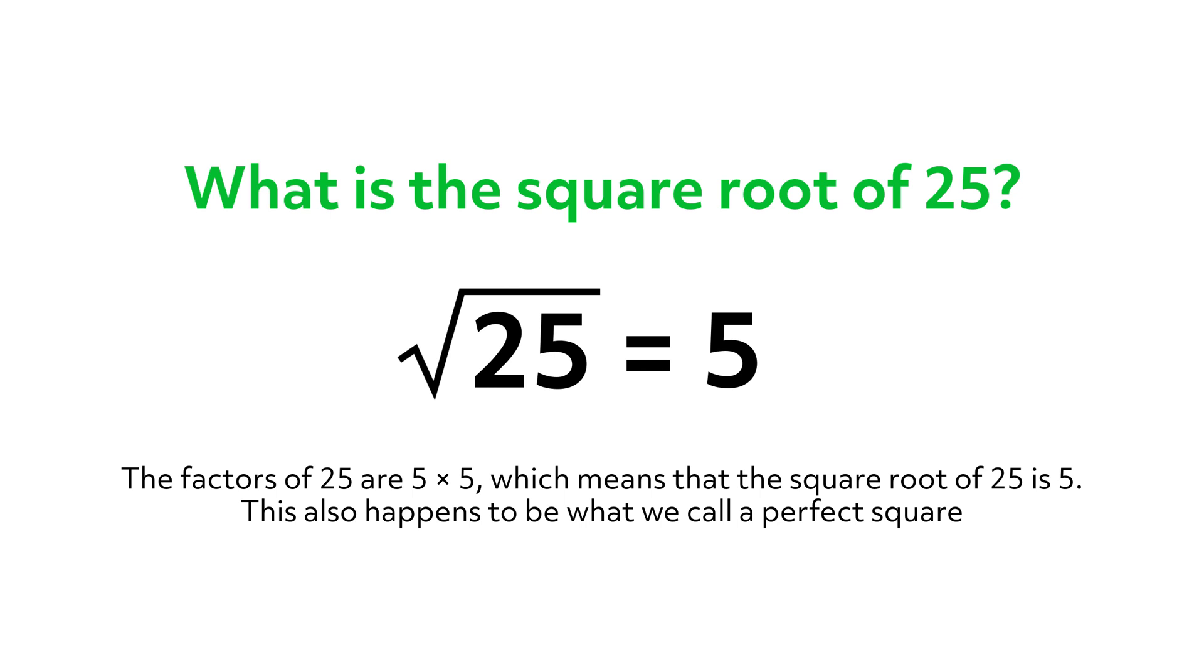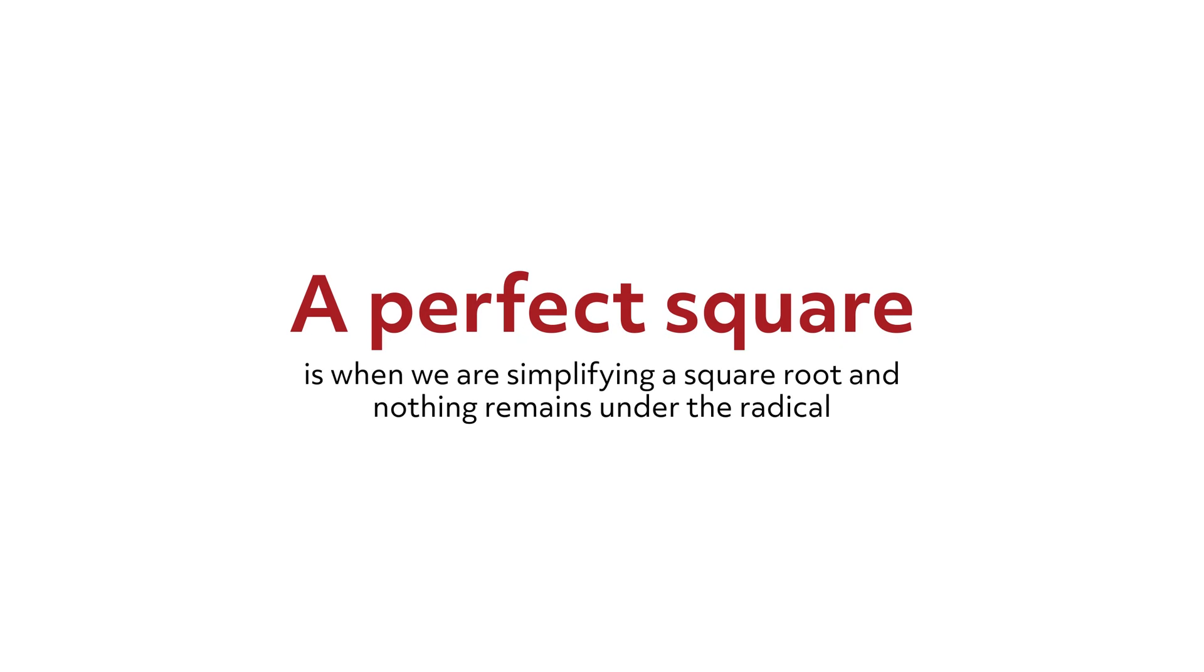This also happens to be what we call a perfect square. A perfect square is when we are simplifying a square root and nothing remains under the radical.